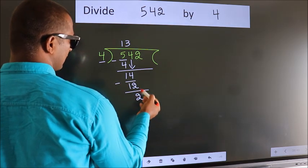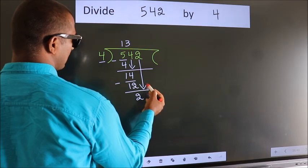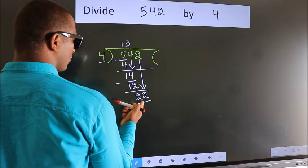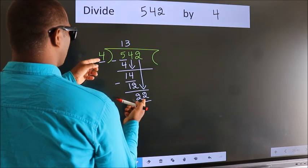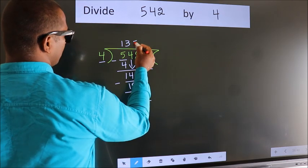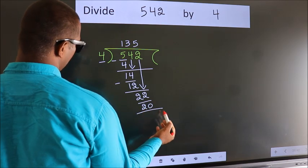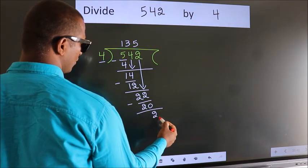After this, bring down the beside number. So 2 down, so 22. A number close to 22 in the 4 table is 4 fives, 20. Now we subtract. We get 2.